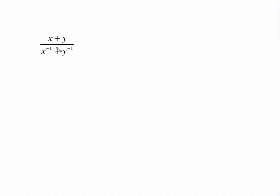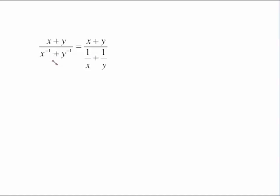Now it gets a little more complicated when you have negative exponents mixed in. The x plus y on the top is not going to change, but I do need to rewrite both of these. Because this says x to the negative 1, you need to remember that a negative exponent creates a fraction — it sends that x to the denominator, so x to the negative 1 is 1 over x. Same idea for y to the negative 1: it gives us 1 over y.